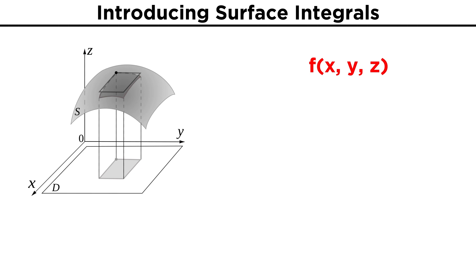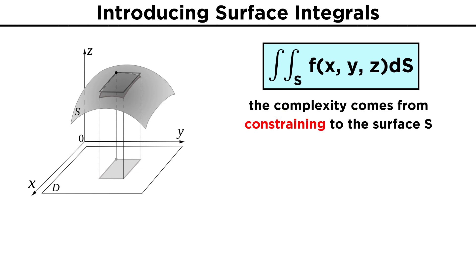If we then have a function F of X Y Z, the surface integral of F over S will be expressed as this integral. While this expression looks fairly simple, just like constraining line integrals to the path of a curve, the complexity here comes from constraining to the surface S.